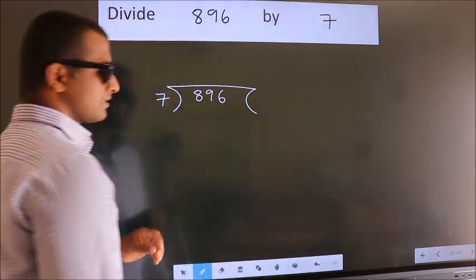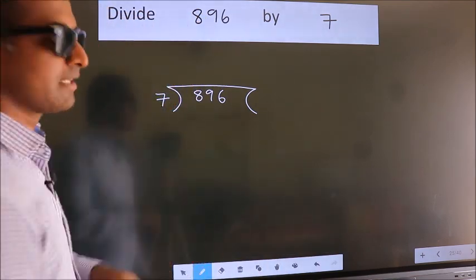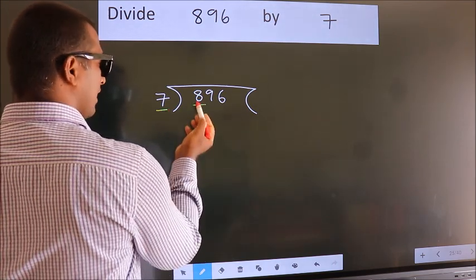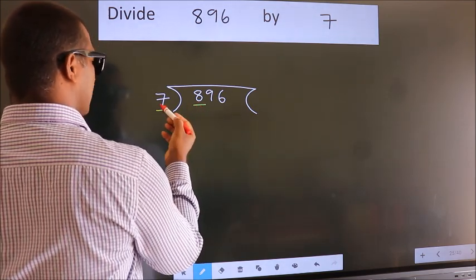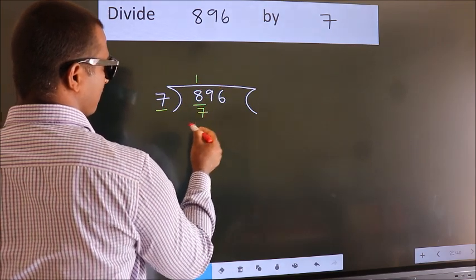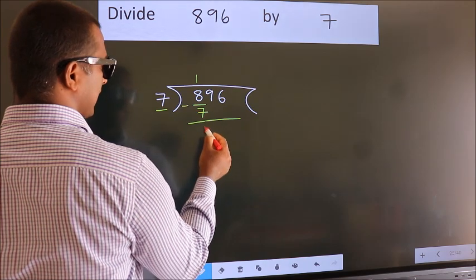This is step 1. Next, here we have 8, here 7. A number close to 8 in the 7 table is 7 times 1 equals 7. Now we subtract and get 1.